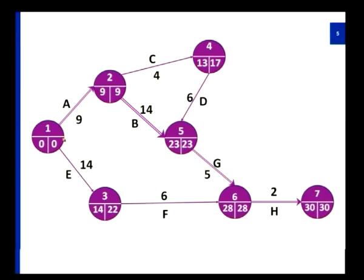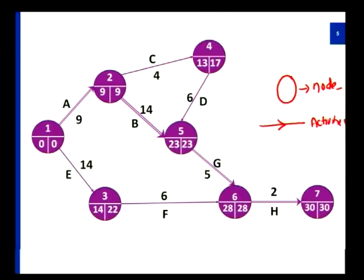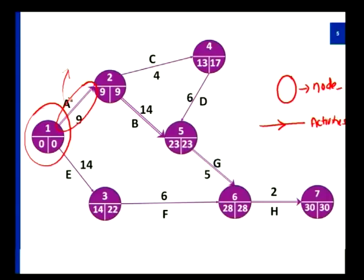After understanding the clear description of this list of activities, I will now give you a rough design of how the program structure flows. With the previous table, now look at this diagram. In this diagram, all the circles represent nodes and all the lines with arrow marks indicate activities. This represents an activity and this will be a node, which will indicate either the start or the end of an activity. If you consider A for example, this becomes the start and this will be the end, and this is the processing time required.